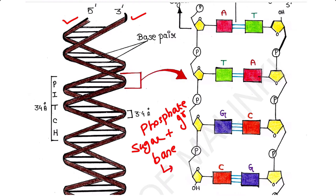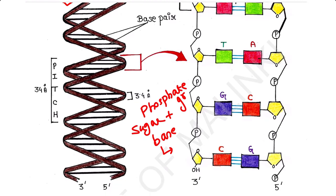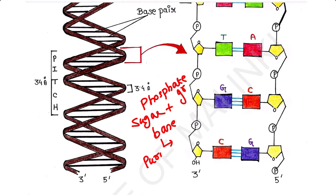The base can be of two types. There are two purines in DNA — adenine and guanine — and there are two pyrimidines in DNA — cytosine and thymine.